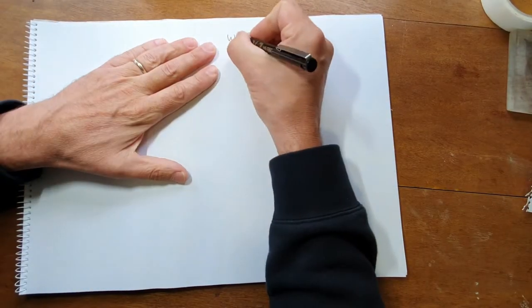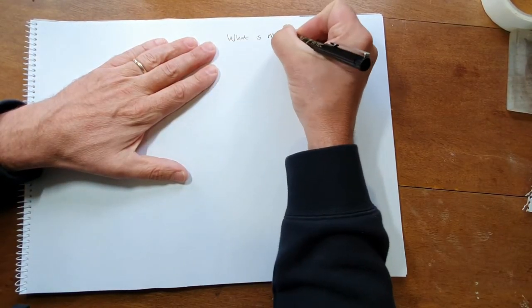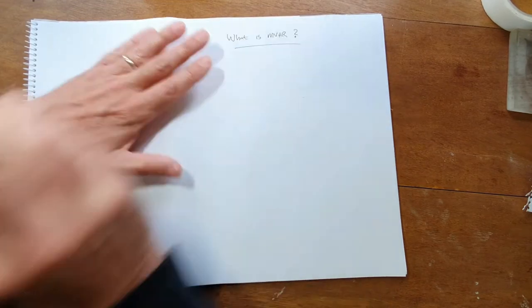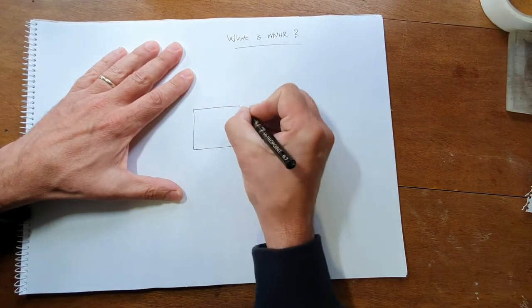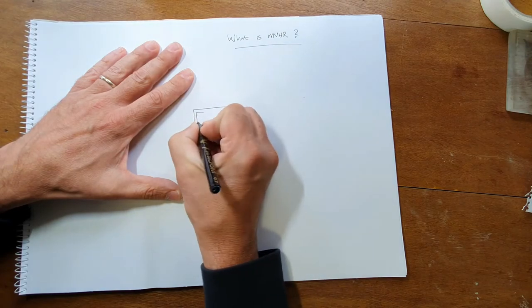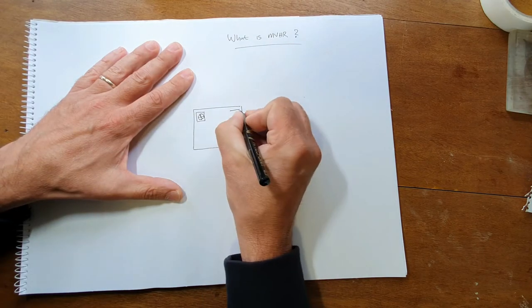So what exactly is MVHR? Best way to show you is to try and draw a picture without missing anything out. I'm not an artist so here goes nothing. Let's start with a box. It's about the size of a washing machine, not quite as deep.